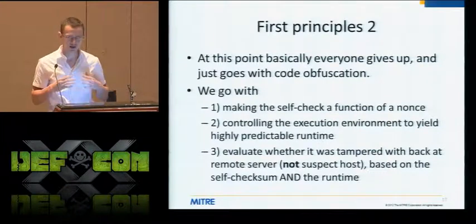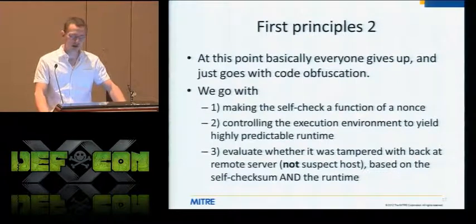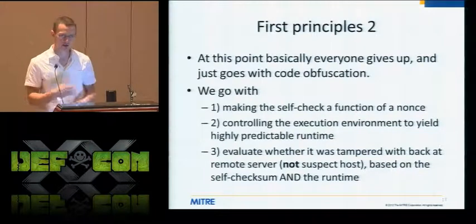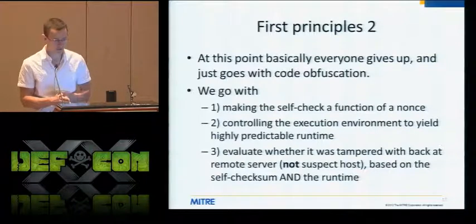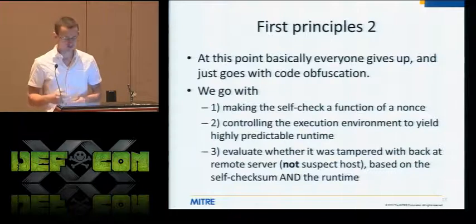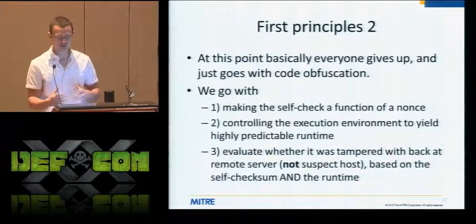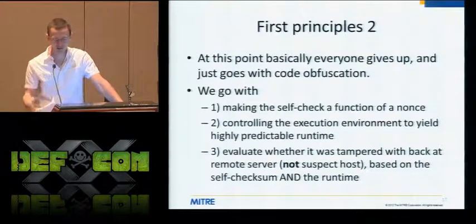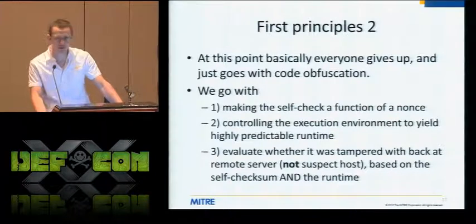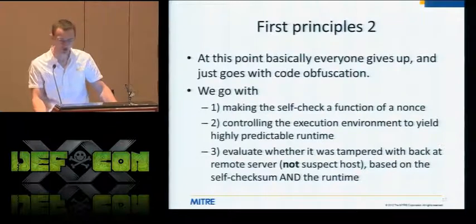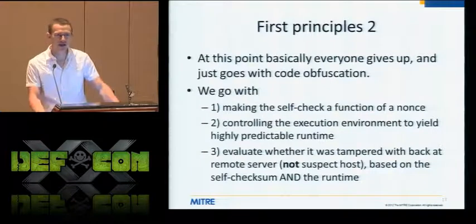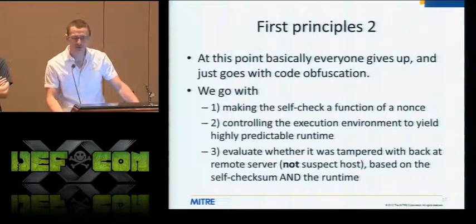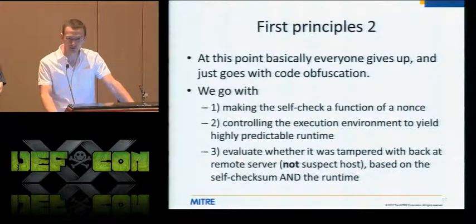To do that, we have to fundamentally change our approach. First, we have to make our self-check — the hash we're doing over our own code — a function of a nonce, a random value sent from a verifier. That way the attacker can't just hard-code the correct value, because it will differ depending on the random value from the verifier. Another key point: with things like Patch Guard that try to measure themselves, the verifier also exists on that system. So if the attacker can compromise the system, they can compromise the verification software too, and Patch Guard would have no idea it's being tampered with. We incorporate a trusted server that we assume is not compromised, which gets the checksum result based on the nonce and makes a determination about whether the software has been tampered with.